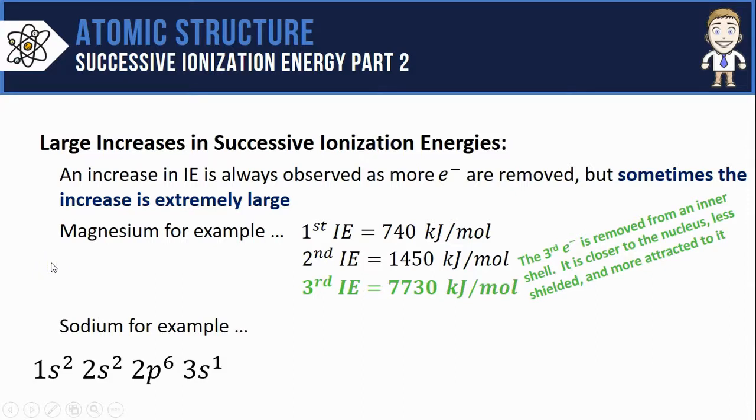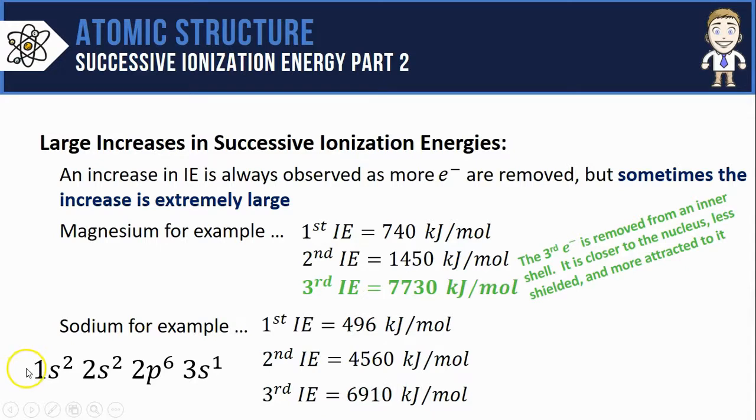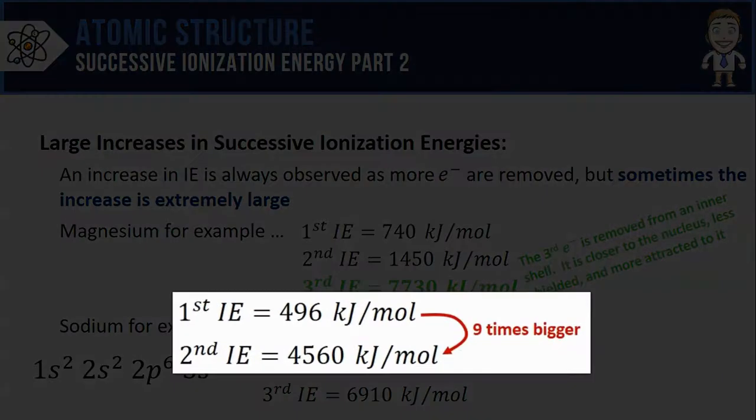Here's its electron configuration and its three ionization energies. So sodium is a little bit different than magnesium—the second electron removal, that's where we see the extremely large increase.